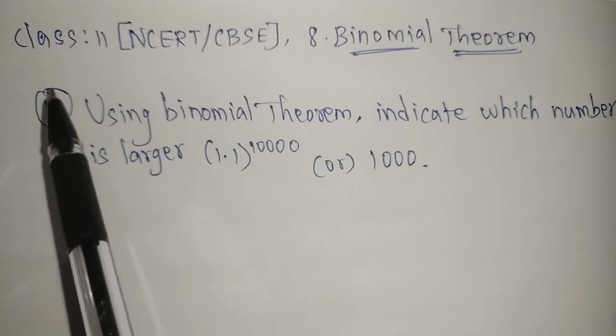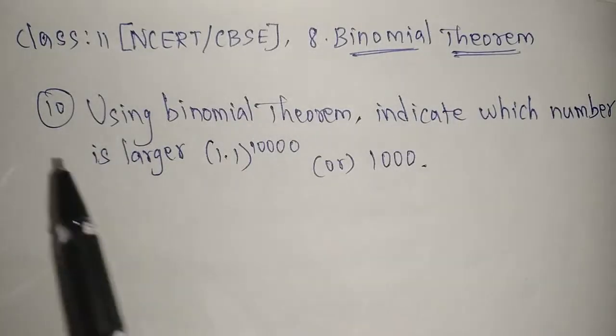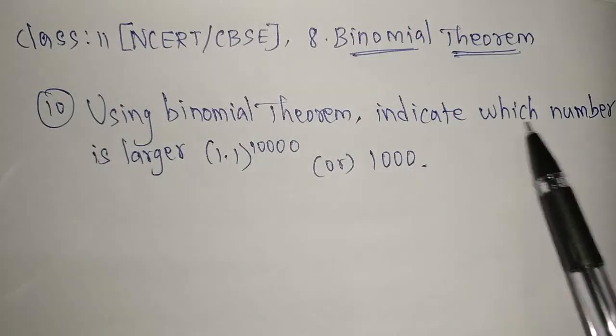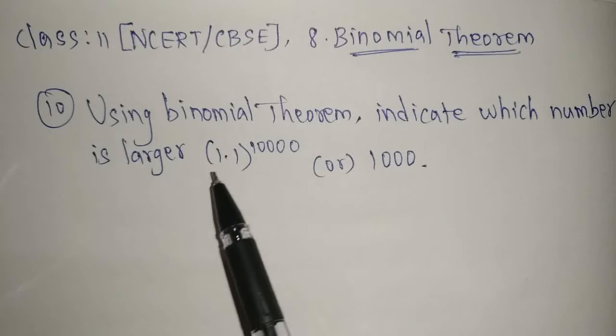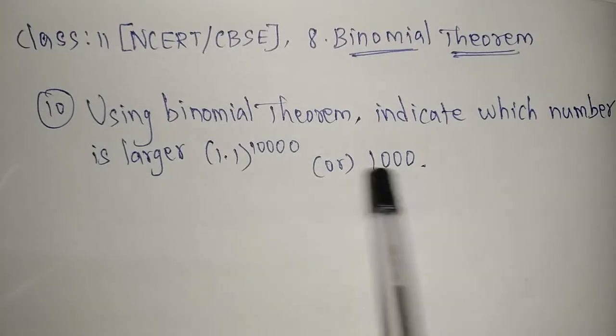Welcome to the channel. Today we are going to see Class 11 NCERT/CBSE Chapter Number 8, Binomial Theorem, problem number 10. Using binomial theorem, indicate which number is larger: (1.1)^10000 or 1000.